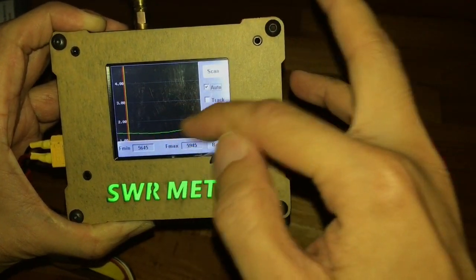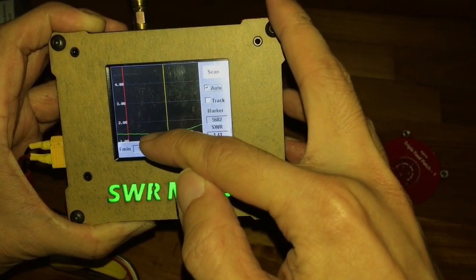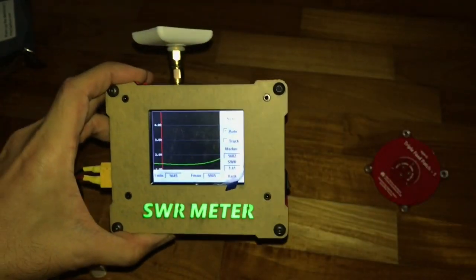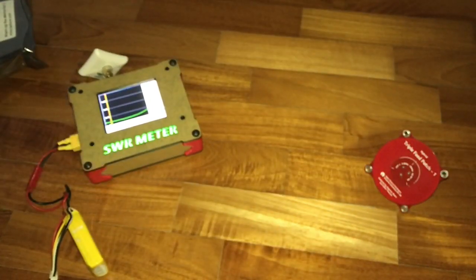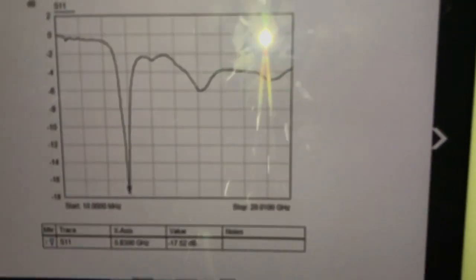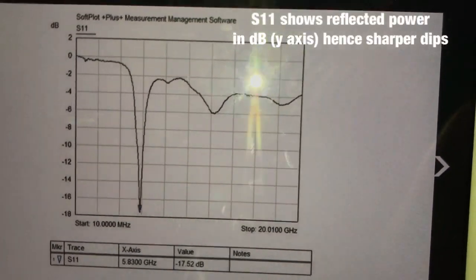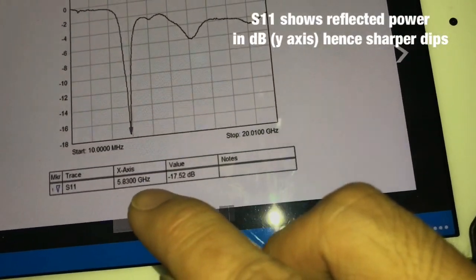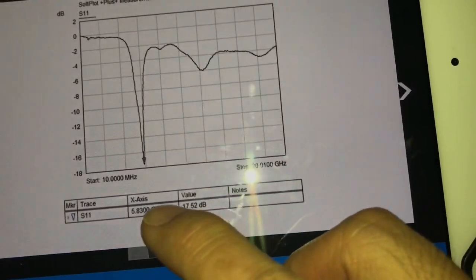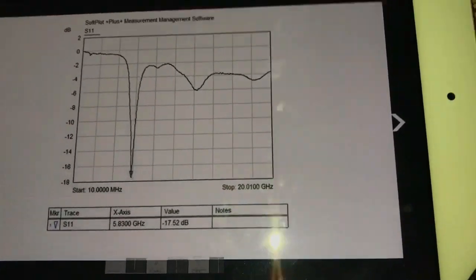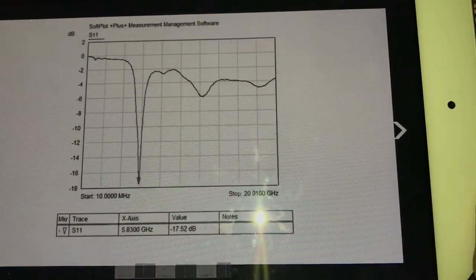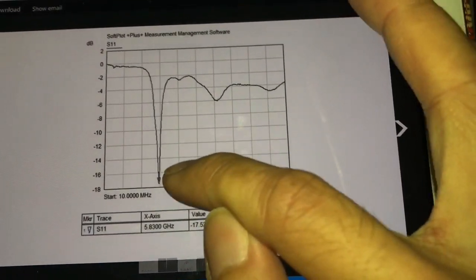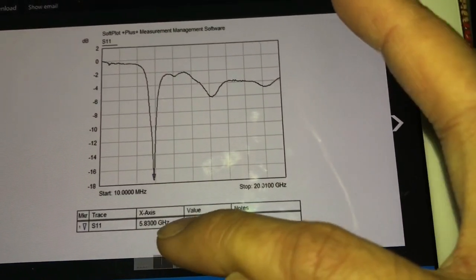Now let's take a look at the measurement that we got from an expensive professional equipment from the labs. So S11 curve shows that the Immersion RRC patch has got only one dip right there. And it's spot on at 5.83GHz. So basically there's no dips elsewhere in the entire spectrum all the way to 20GHz. There's only one dip right there at 5.83GHz.